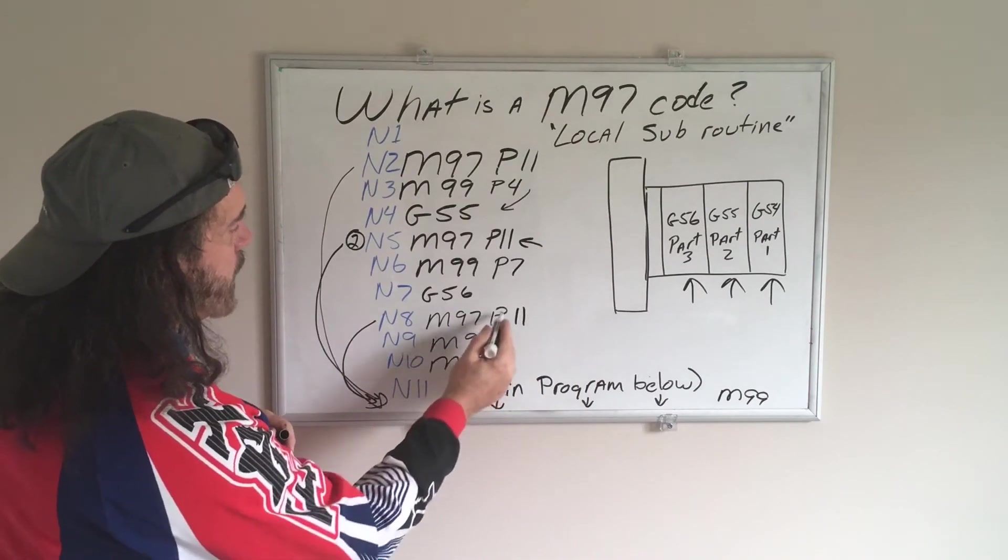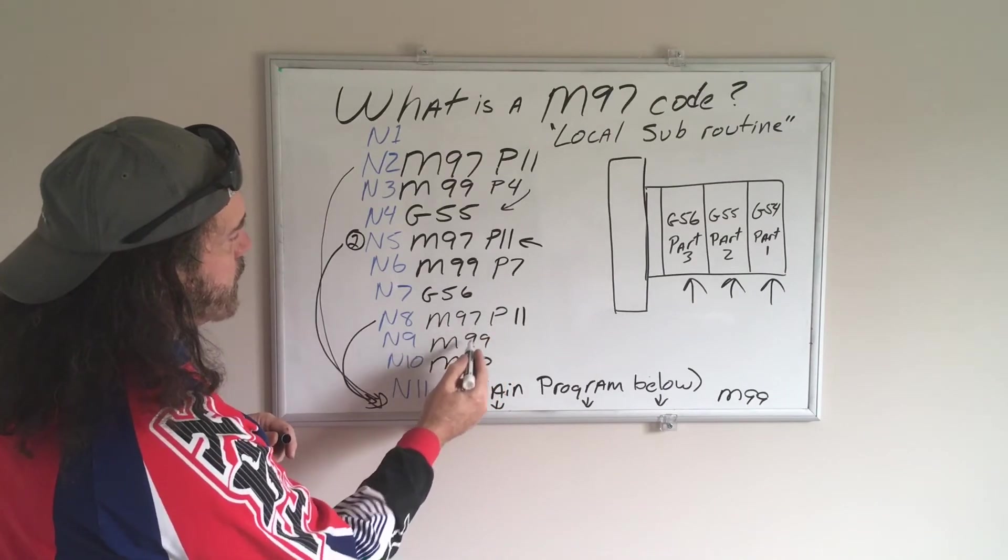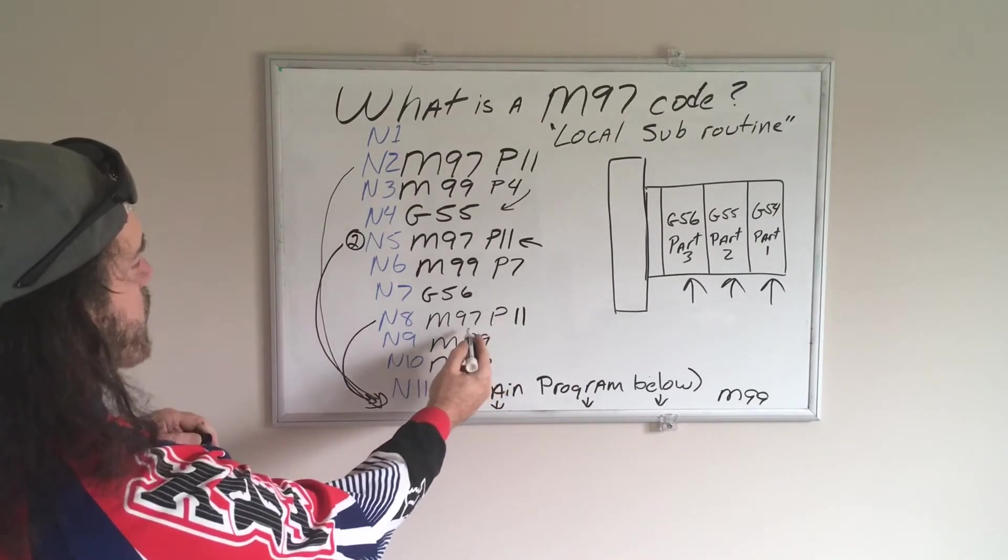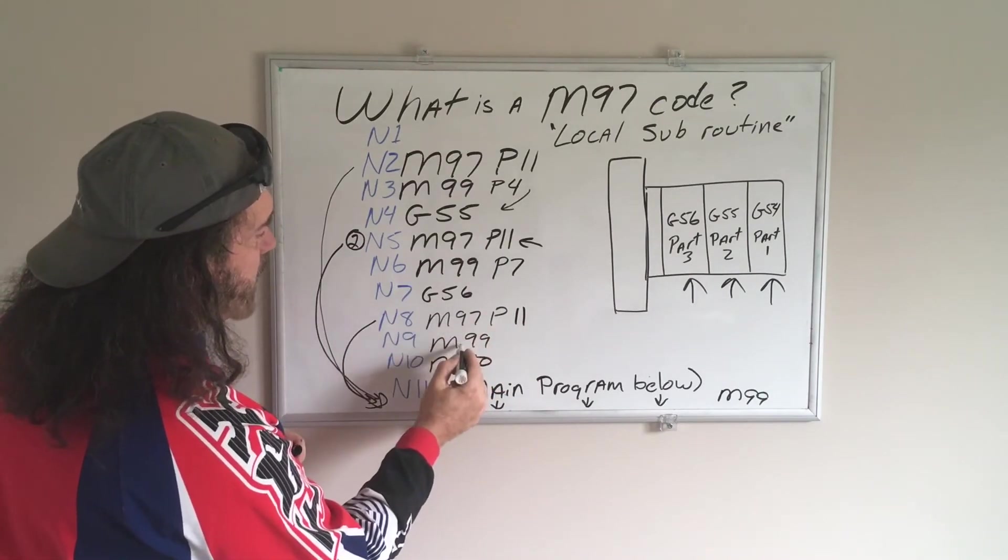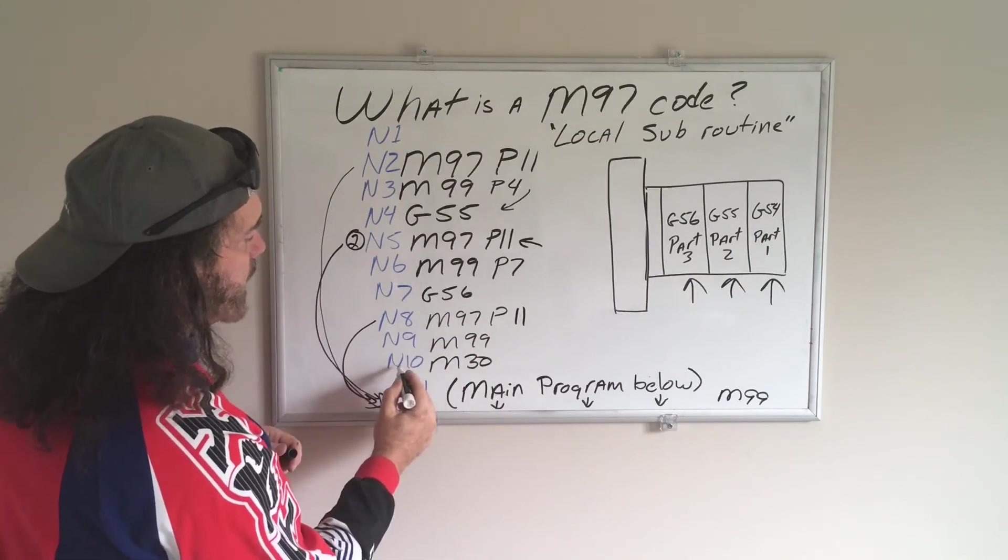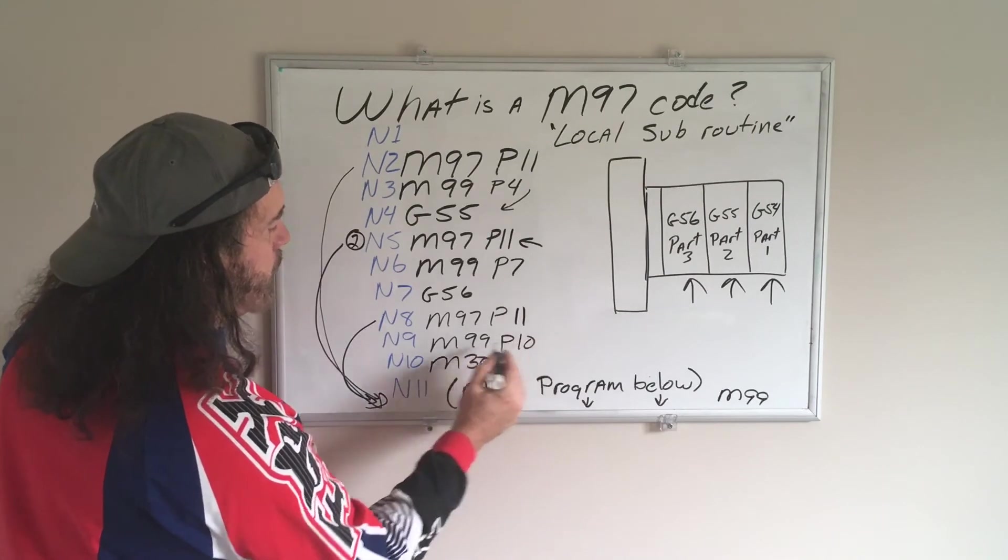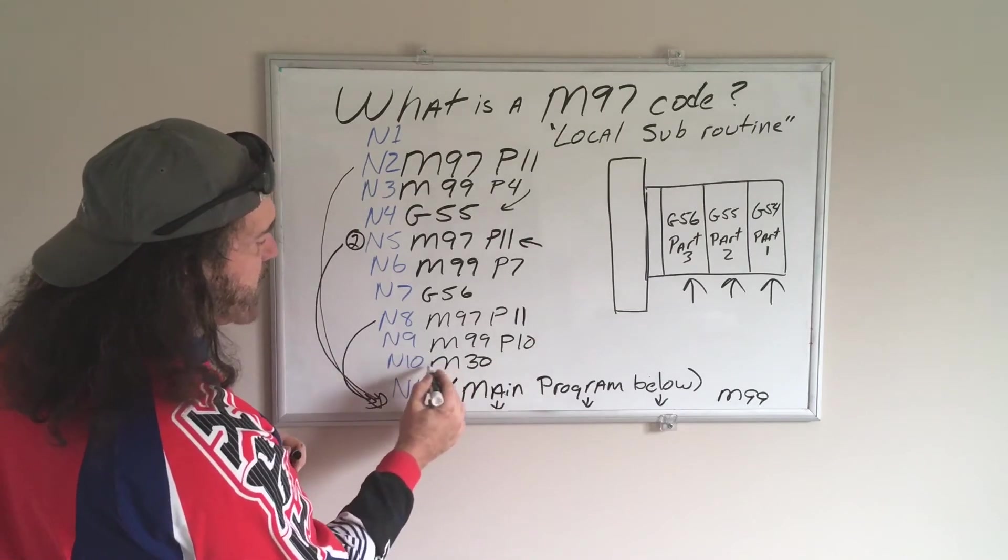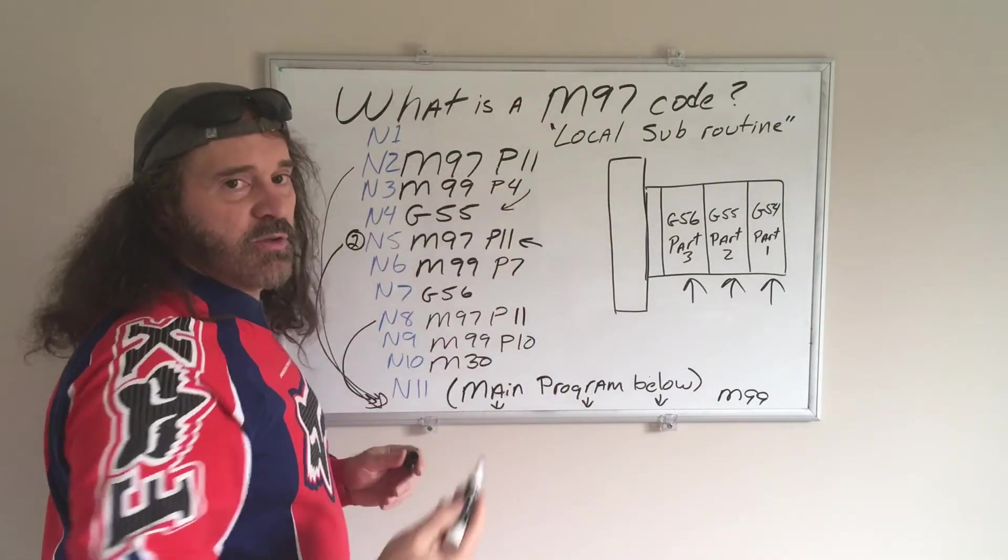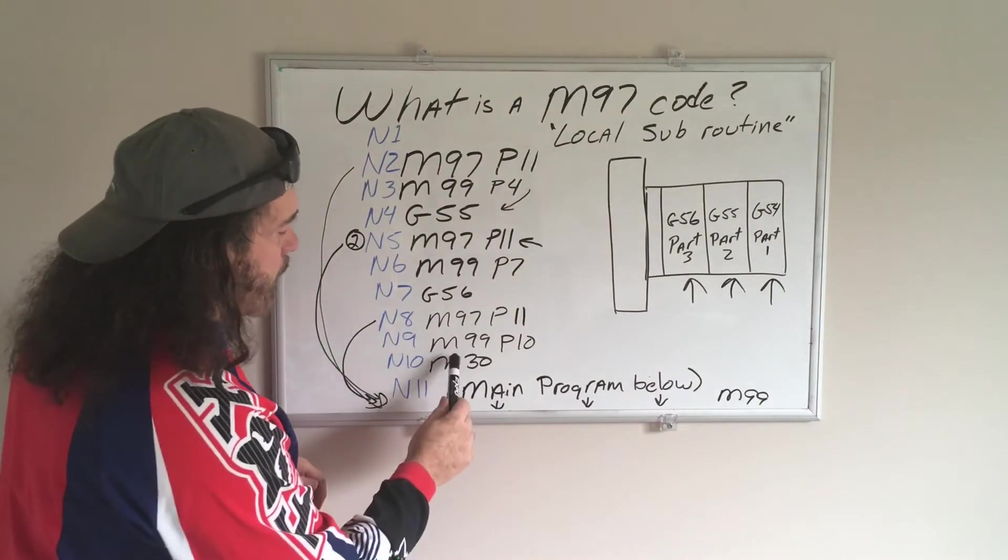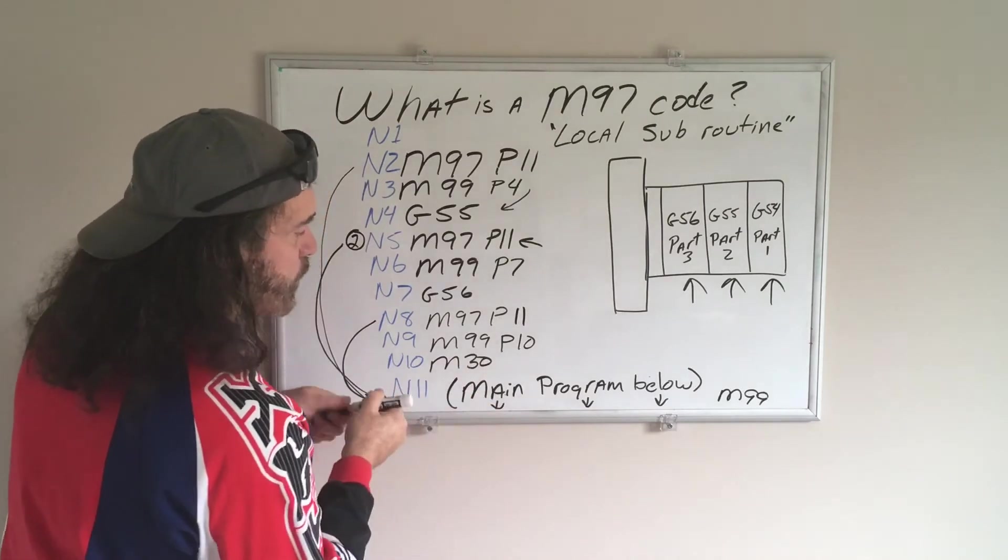And from here on out, now we've got to tell, okay, I want it to jump down to here. So let me rephrase that. So now we have to continue on. It's going to jump down to M99. So I want to come down to line 10. So that's a P10. And that's telling it to go down to here, which reads the M30, which stops the program and rewinds it back to the top.